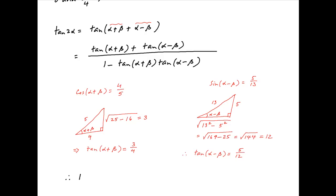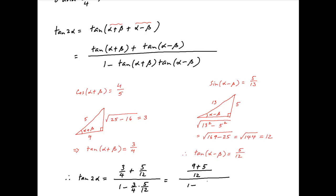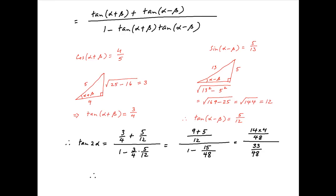Going back to the expression for tan(2α) and substituting the above results, we get tan(2α) = (3/4 + 5/12) / (1 − (3/4)×(5/12)). This equals (9+5)/12 in the numerator and (1 − 15/48) in the denominator, which simplifies to (14×4/48) / (33/48). Therefore, tan(2α) = 56/33, which is the required answer.